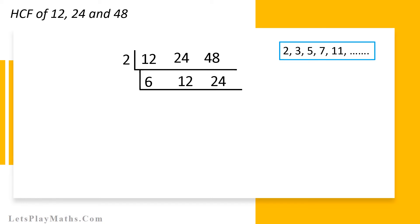Right now, we have 6, 12 and 24 with us. We have to find out the lowest prime number that will divide 6, 12 and 24. As we can see, 6, 12 and 24 can be divided by number 2 again. So let's consider number 2 as our lowest prime number. Now, divide 6, 12 and 24 by 2 and we get results 3, 6 and 12 respectively.